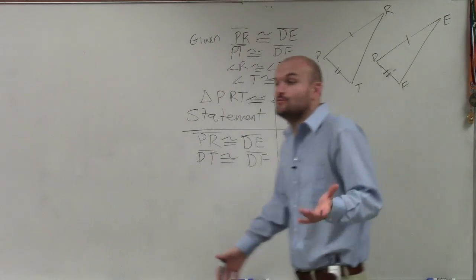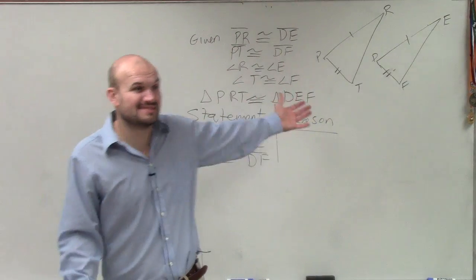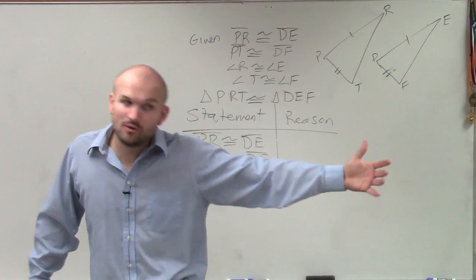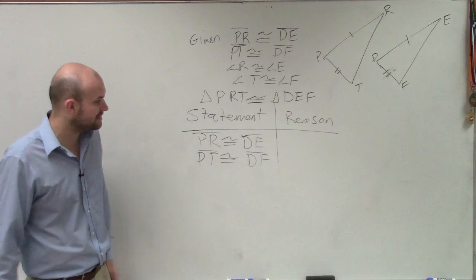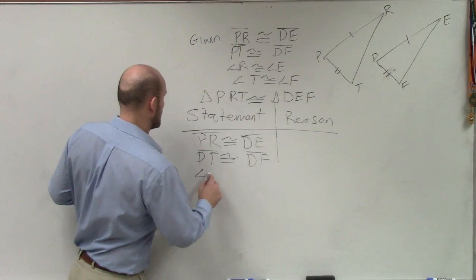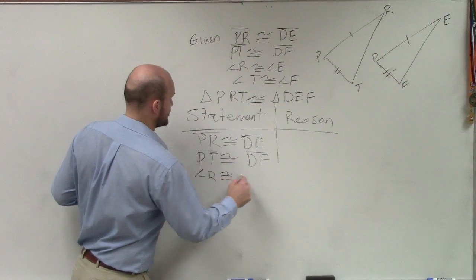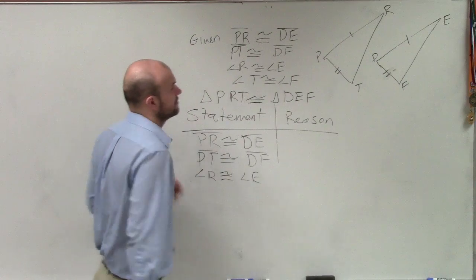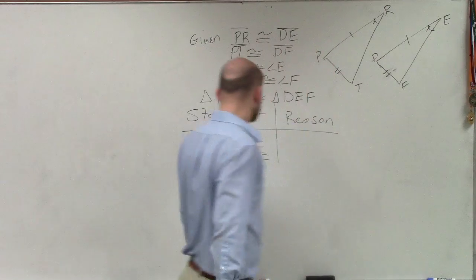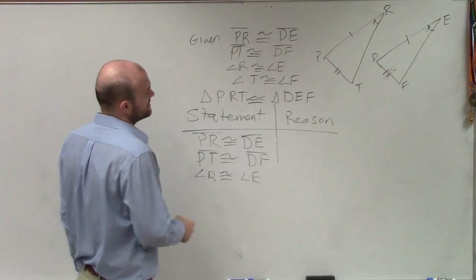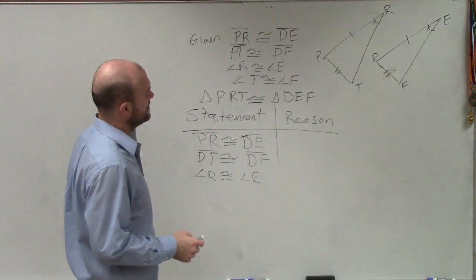Now, again, the reason why I'm not using one tick mark again, because they could be the same measurement. But we don't know that, so we don't want to assume they are. So I'm going to give them two tick marks to differentiate between the two. Then we have angle R is congruent to angle E. And we have angle T is equal to angle F.